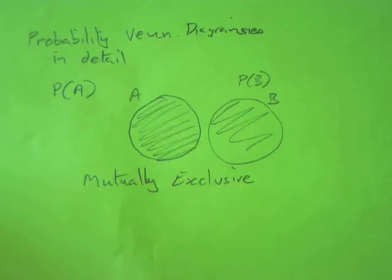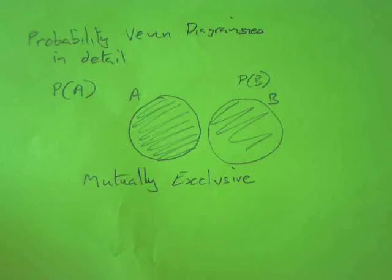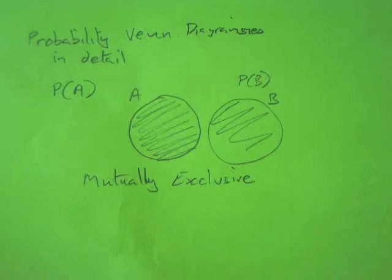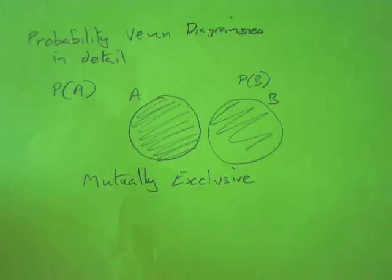Mutually exclusive would be heads and tails. Those are two possible events. You can either have heads or you can have tails. You can't have both at the same time. It doesn't work like that. So two things that are totally mutually exclusive.